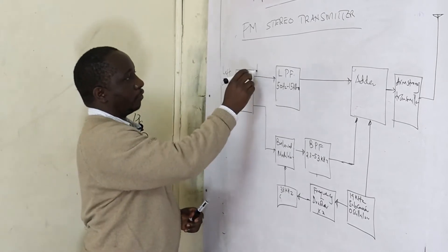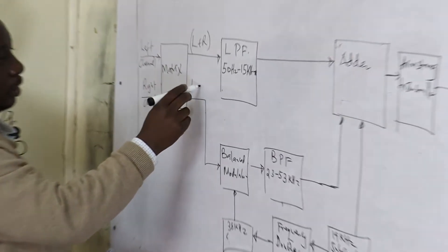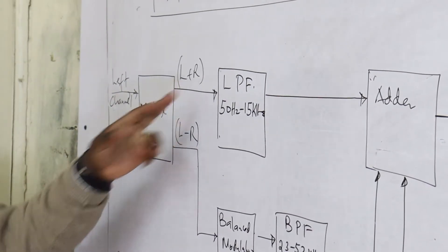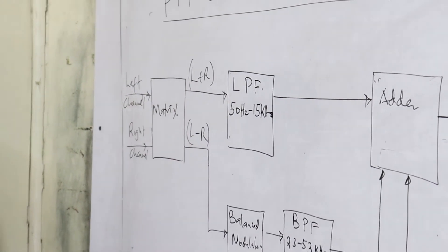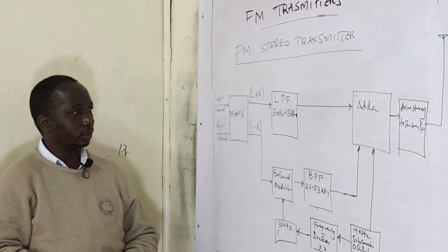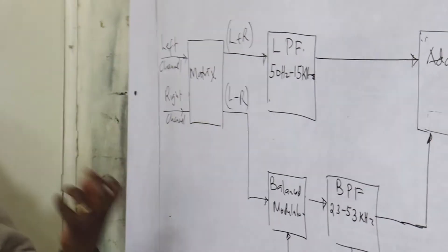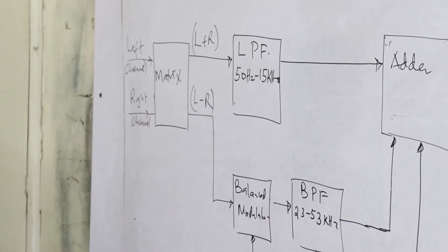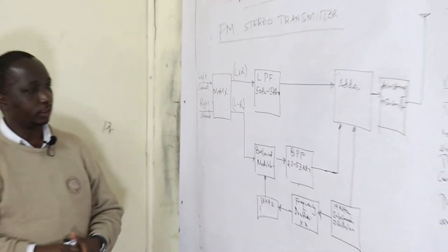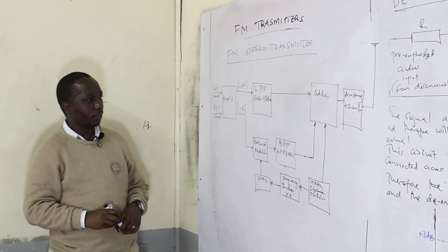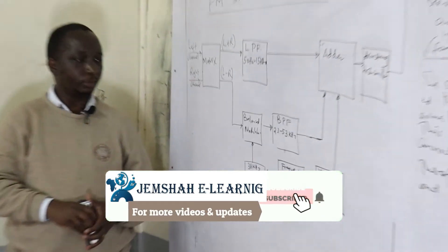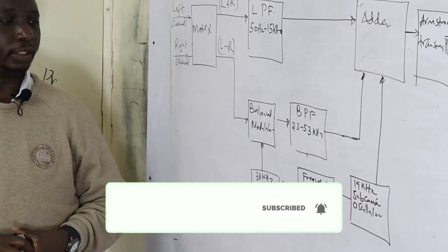The left plus right channel is modulated in the same manner, while the left minus right channel is modulated as an anti-phase. We come in with the two channels and go through a matrix. We use a 19 kilohertz carrier sub-oscillator that is frequency doubled.